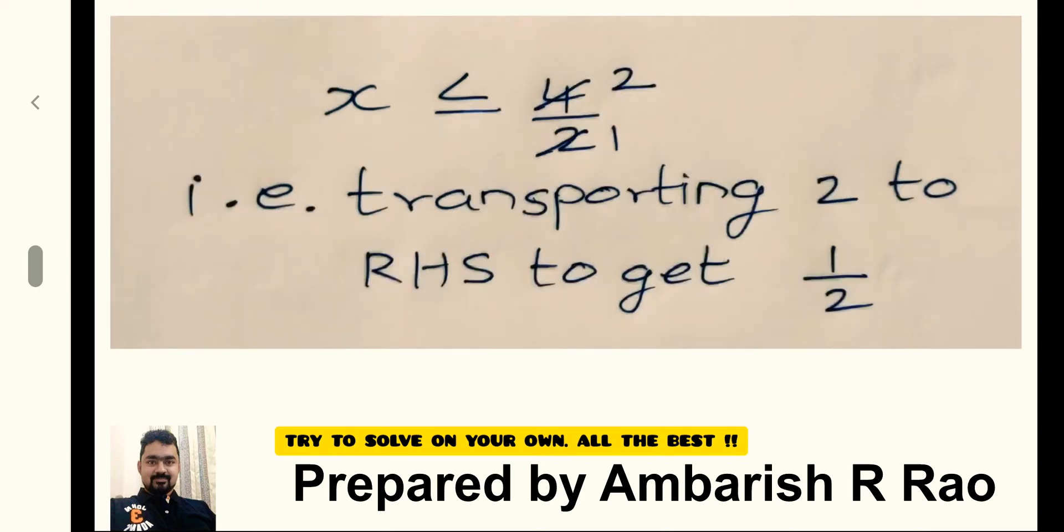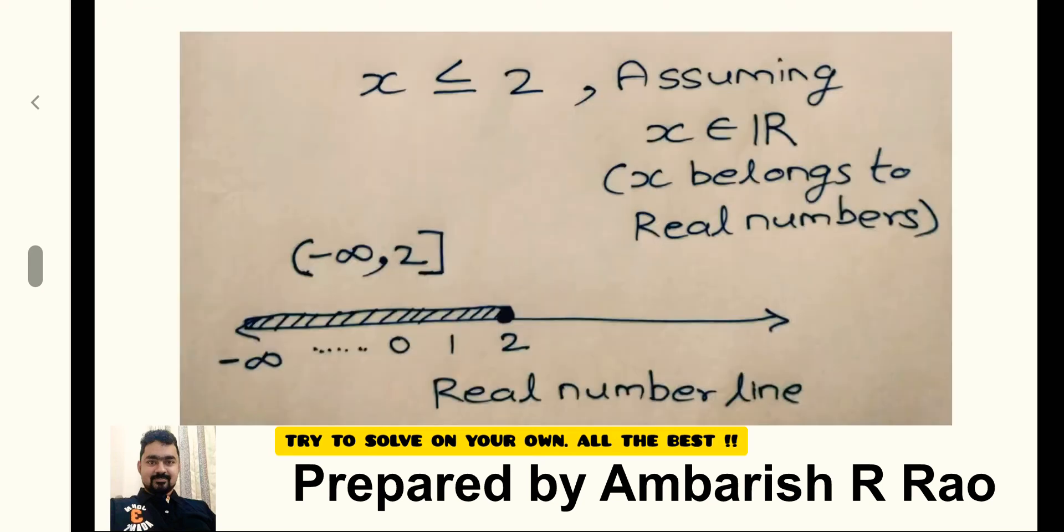x is less than or equal to 4 by 2 or just 2. By transporting 2 to the right hand side, we get 1 by 2. x is less than or equal to 2.